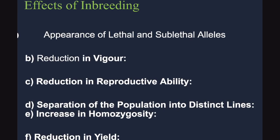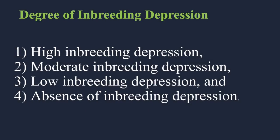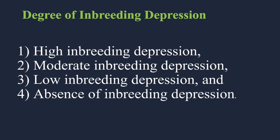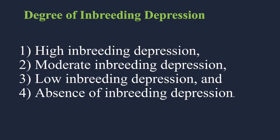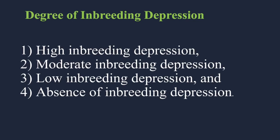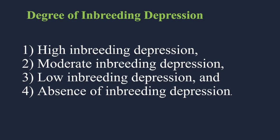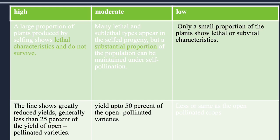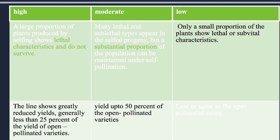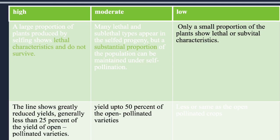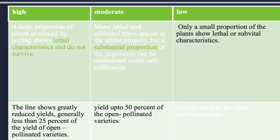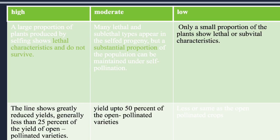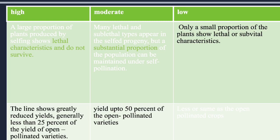There are four kinds or degrees of inbreeding depression: high, moderate, low, and absence of inbreeding depression. In high degree inbreeding depression, a large proportion of the plants produced by selfing show lethal characteristics and do not survive. In moderate degree, a substantial proportion of the population can be maintained under self-pollination. In low degree, only a small proportion of plants show lethal or subvital characteristics and they can survive easily.